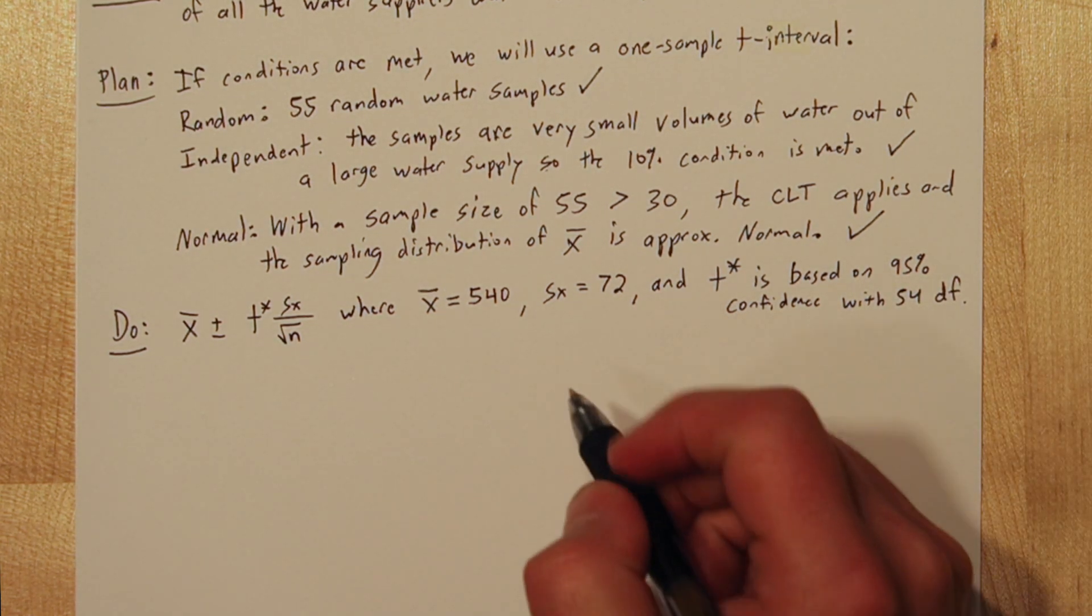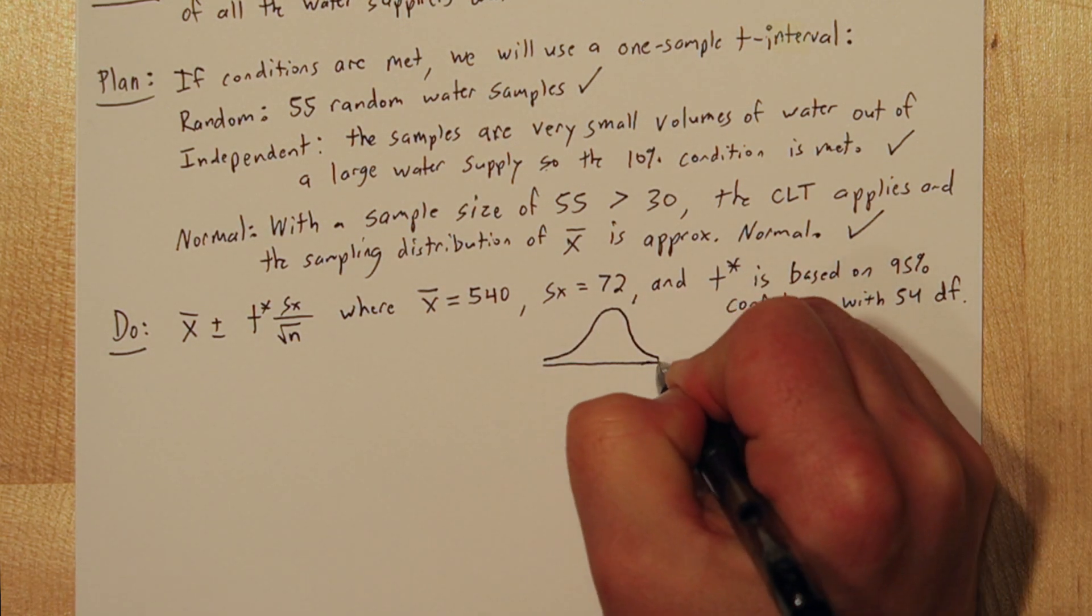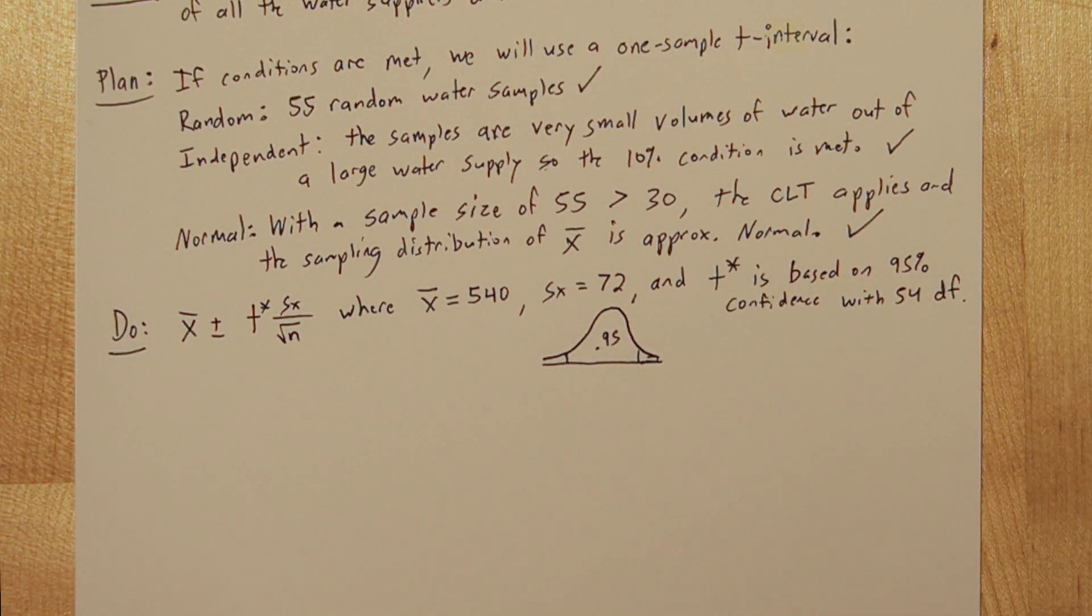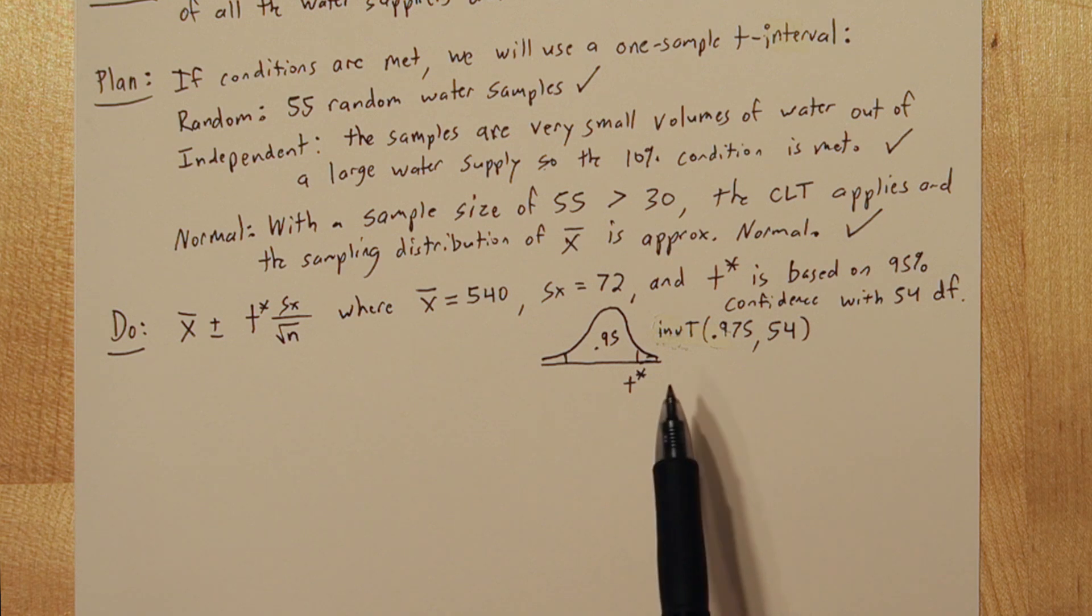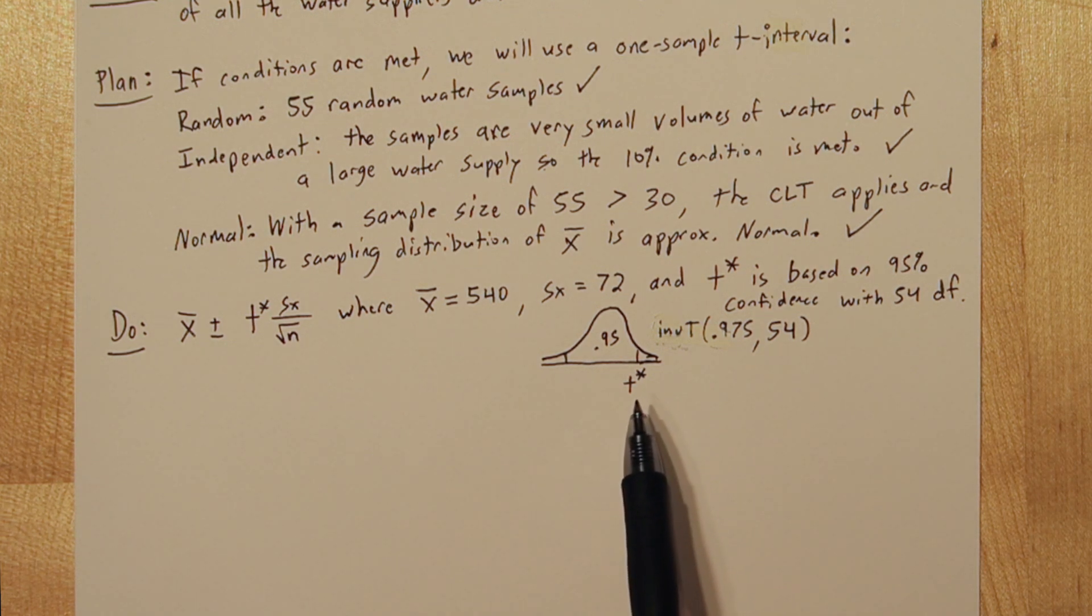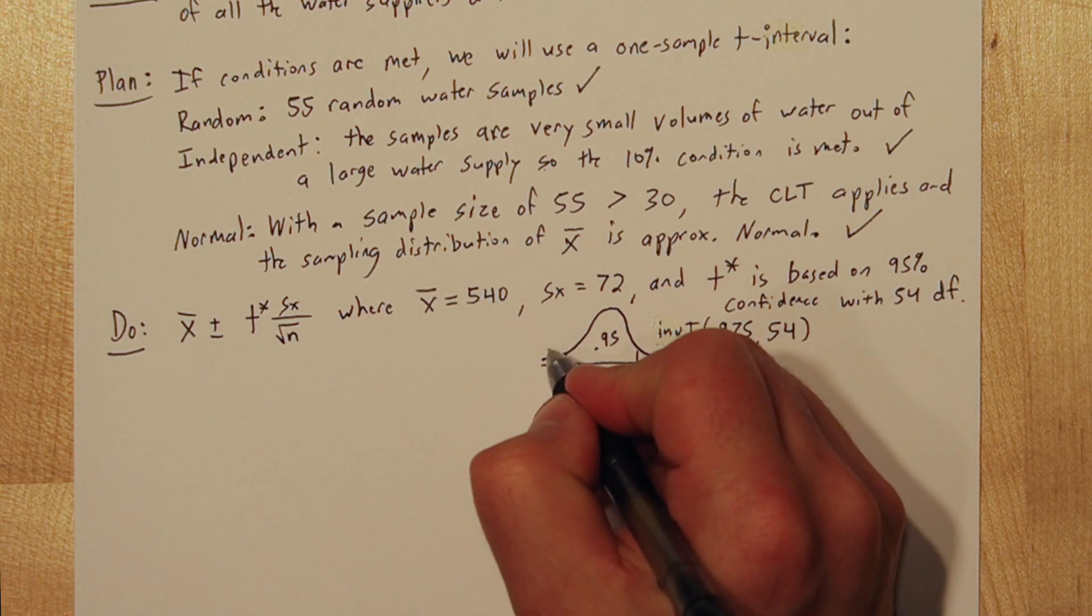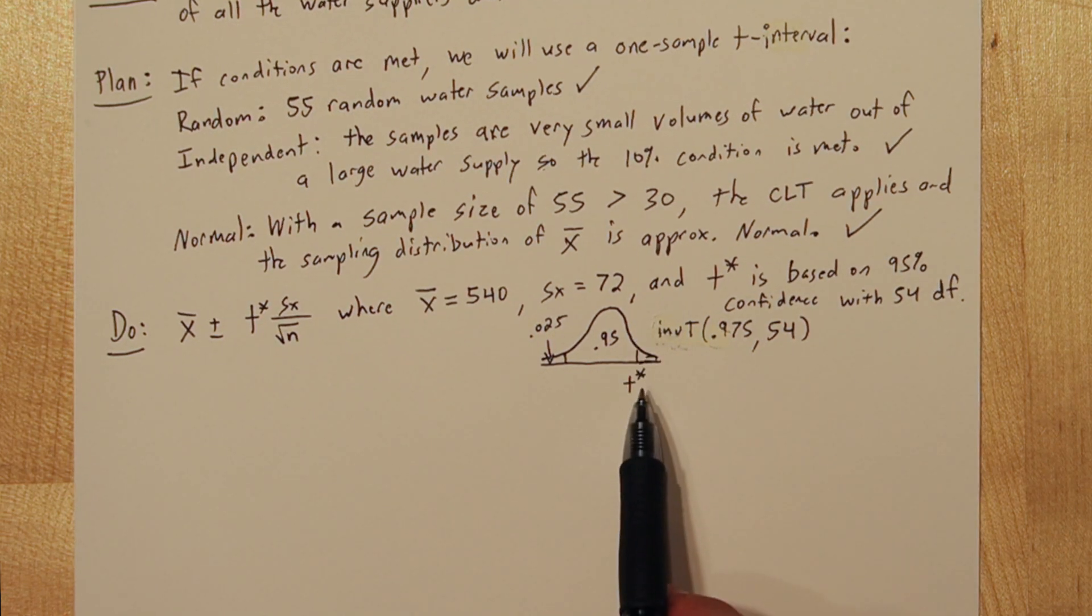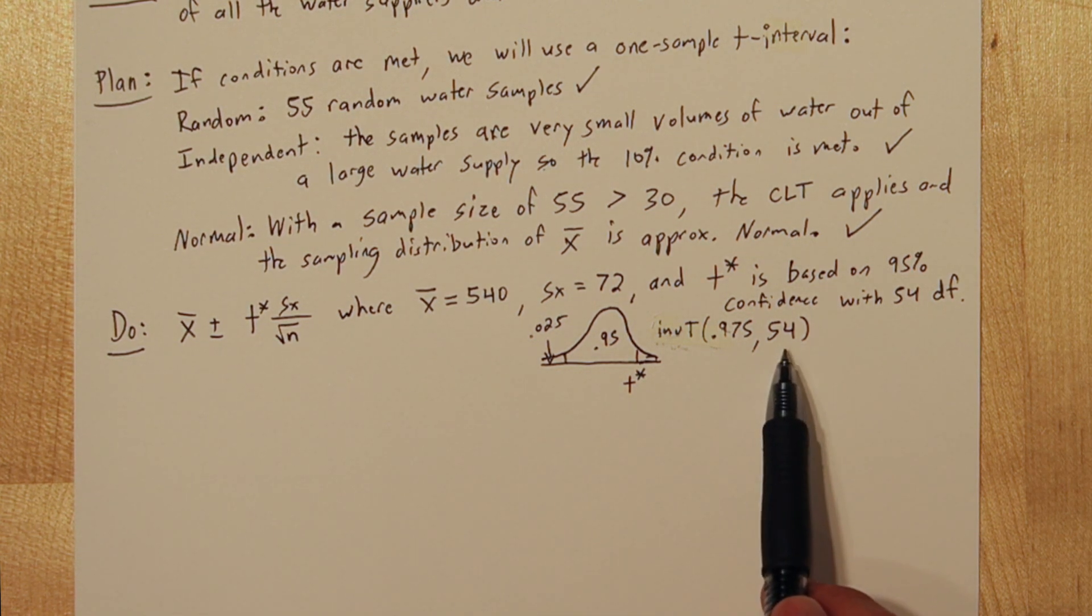Let's start by drawing the t-distribution with 54 degrees freedom. It's going to look very similar to the normal distribution. Now we need to figure out what cuts off the middle 95% of the data. That will give us our critical value. To figure out what this critical value is, we need to feed inverse t 0.975. That's because inverse t works by you telling it everything to the left of the cutoff value. If there's 95% area right here, then in the tail there's 2.5% area. So to the left of this t-star is actually 97.5% of the area. You also have to tell it degrees freedom, which is 54.